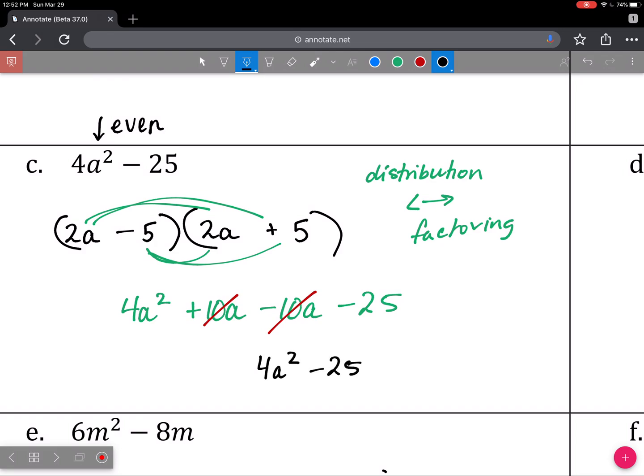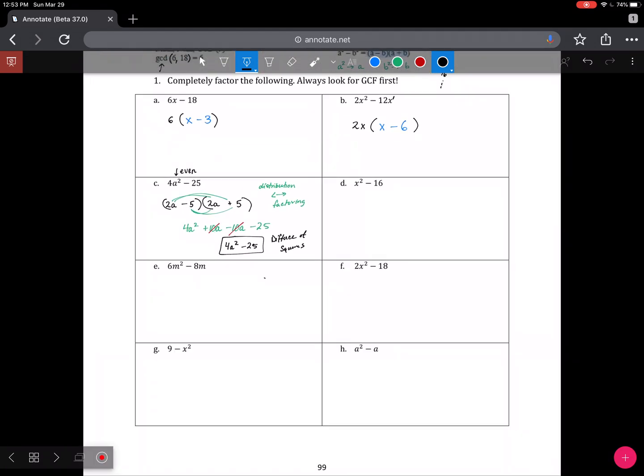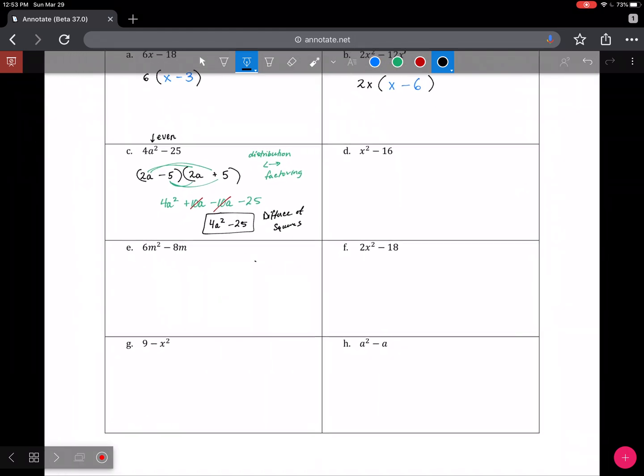Notice how the final term here, this minus 25, it's negative because one of the terms is negative and one of the terms is positive in that final step of the distribution. And so that's why we can only do difference of squares. We're not doing any sum of squares, only difference of squares. I'm going to leave letter D and letter E for you guys to try on your own. Remember that you can always access my site for the full completed notes.